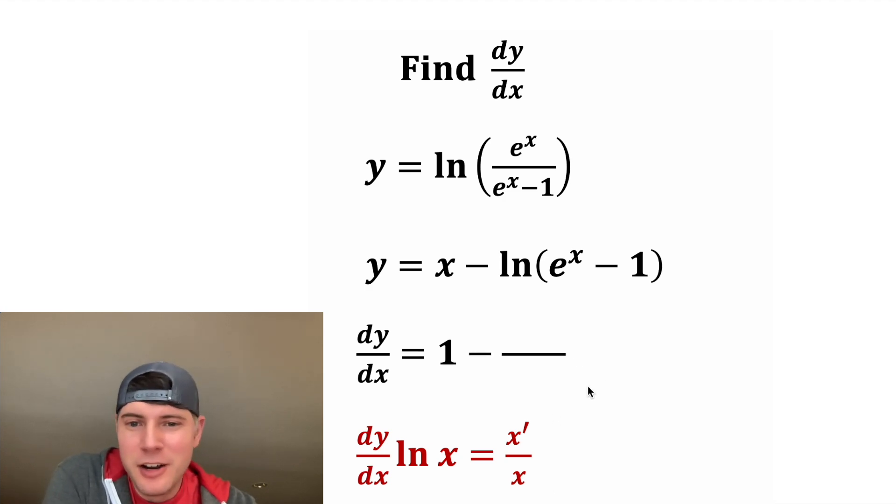So let's do our fraction here, where we put x on bottom, but x is this whole e to the x minus 1. And then on top is the derivative of this, and the derivative of this is just e to the x, and the derivative of negative 1 is 0.